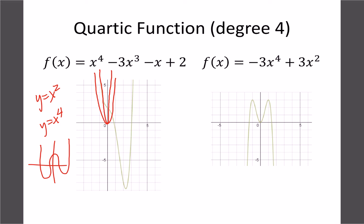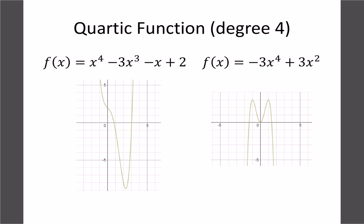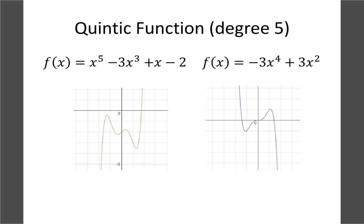Just like cubics, a quartic can have up to four x-intercepts. You can see in one diagram we have three — if the middle one dipped a bit more we'd have four. It's also possible to have just two, just one, or even zero x-intercepts, like a W-shape that never touches the x-axis whether right-side up or upside down.